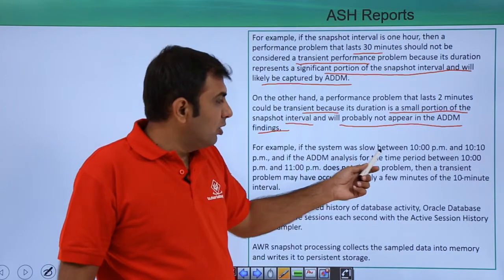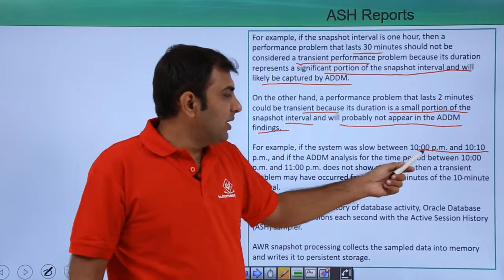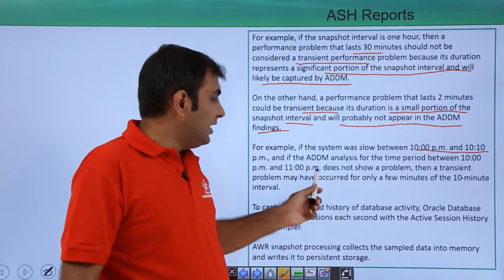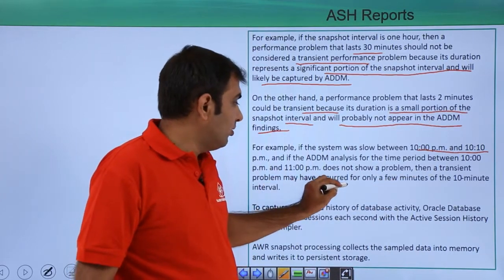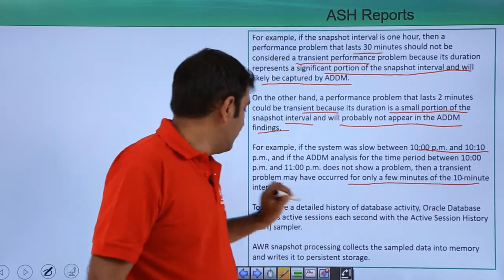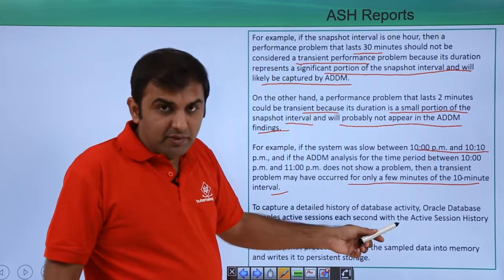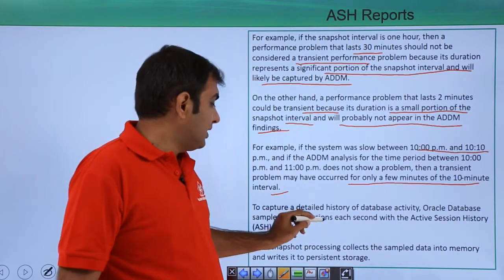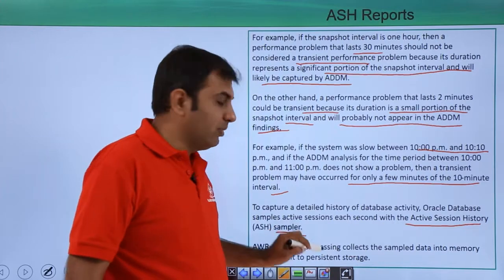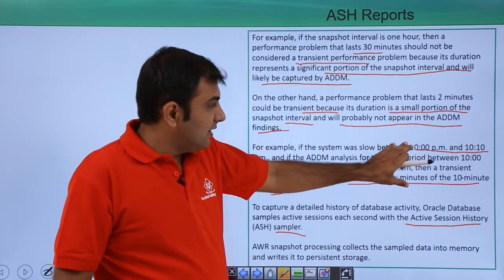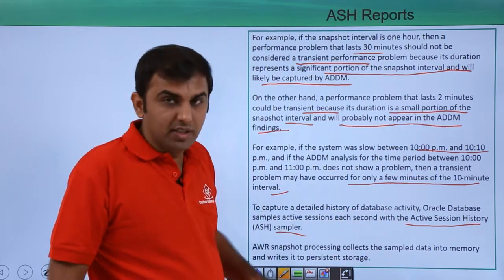For example, if the system was slow between 10 PM and 10:10 PM, and ADDM analyzed the time period between 10 PM and 11 PM and does not show the problem, then the transient problem may have occurred for only a few minutes — around a 10-minute interval. To capture the detailed history of database activity, Oracle database samples activity for each session with the Active Session History sampler. These kinds of issues you can handle with the ASH — Active Session History.